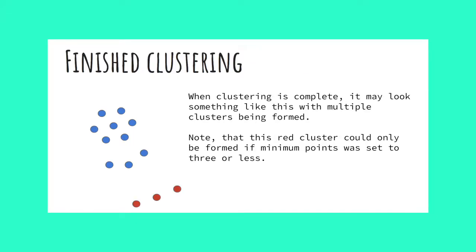As this algorithm finishes running, it may eventually form multiple clusters, as seen in this example. Note that this red group could only form if the minimum points was set to three or less. Now that you understand how DBSCAN works, I'll show you a start-to-finish visualization of the running algorithm found at naftaliharris.com.